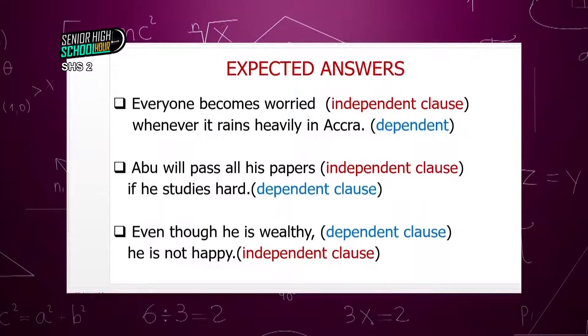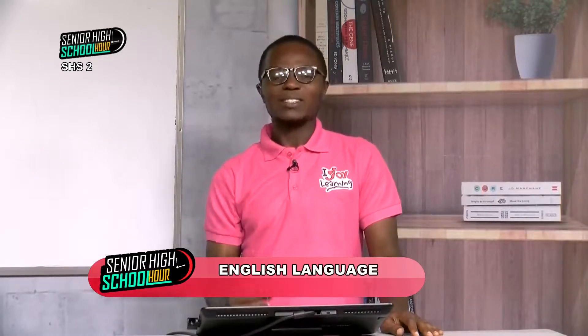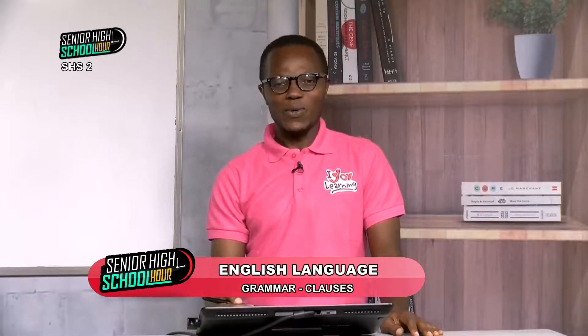Our next example: 'even though he is wealthy' — somebody will ask you what you mean, it doesn't make complete thought. So the next part 'he is not happy' is the independent clause. If someone said 'Kofi is not happy,' you understand, and then 'because he doesn't have money' gives the reason — but it depends on 'Kofi is not happy.' That is what I wanted us to understand: clauses can be independent or dependent.